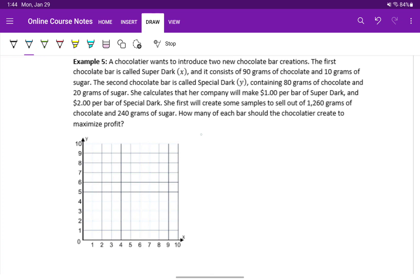We can start with identifying our objective function. In this case, we're told in the very last statement that what we want to do is maximize profit. So we want to look for the information that tells us about how much money she'll make.